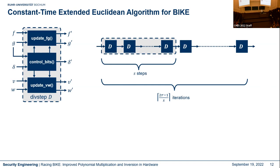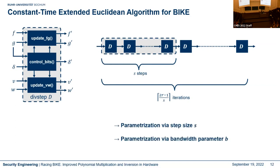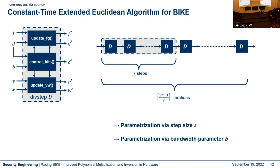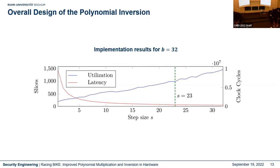We have two parameters to control latency and area: the step size s and bandwidth parameter b. For b equal to 32, sweeping over step size s — which can be at most b — shows that increasing s reduces latency but increases hardware utilization linearly.